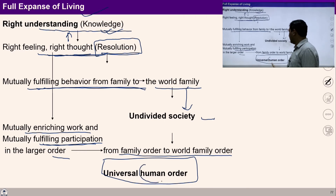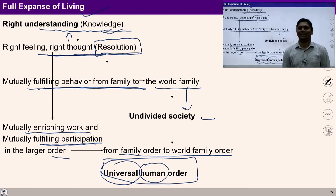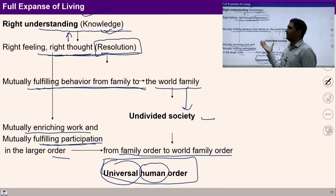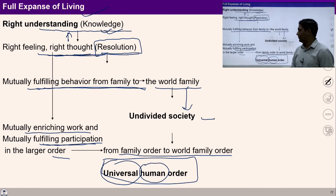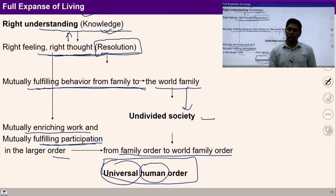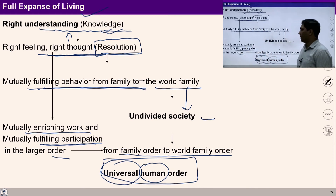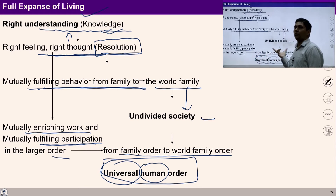Universal human order means a human who is living with universality. This is our expansion of living. Students, you can take a pause for two minutes and ask yourself: do you have this feeling of family to world family order? Have you ever thought about your participation from family to world family order?